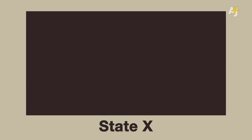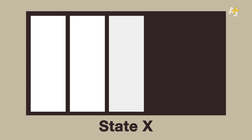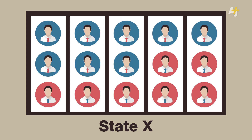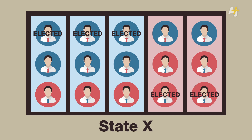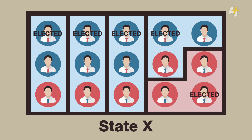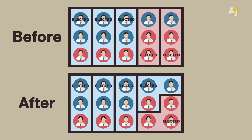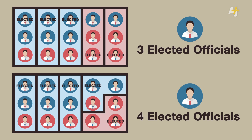Take State X, for example. It has five districts, two political parties, and an elected official for each district. Here's what the districts looked like before, and here's what they looked like after they were gerrymandered. Same number of voters, completely different outcomes. All of this is done so the party doing the redistricting can win more seats. And this leads to unequal representation.